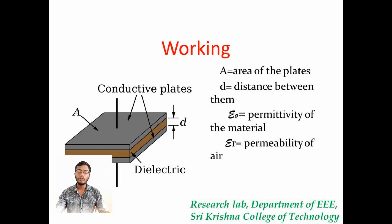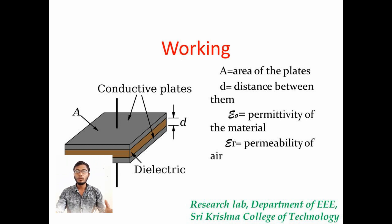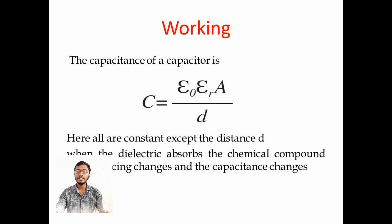I am going to explain you about a general example of a chemical sensor — a dielectric capacitor. In a dielectric capacitor, there are two plates separated by a distance d. The area of the plates is considered as a and a dielectric is present. Consider a dielectric of permittivity epsilon naught and the permittivity of air is epsilon r. According to capacitance, C is equal to epsilon naught times epsilon r times a divided by d.